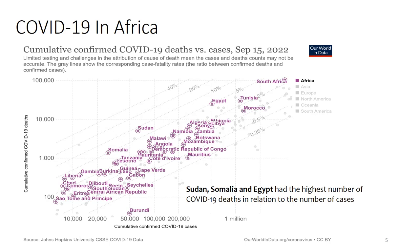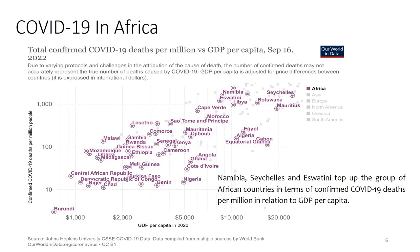The next indicator focuses on COVID-19 deaths in relation to GDP per capita — confirmed COVID-19 deaths per million people relative to GDP per capita. Countries like Namibia, Seychelles, and Eswatini top the group of African countries in terms of confirmed COVID-19 deaths per million. This can be explained by factors including the health system, the health situation of the population, comorbidities, and the mobility restriction measures implemented by these countries.